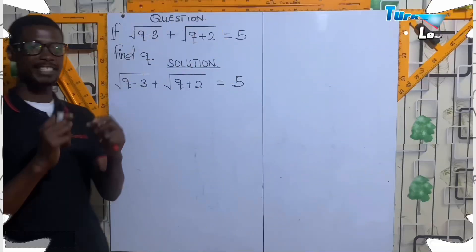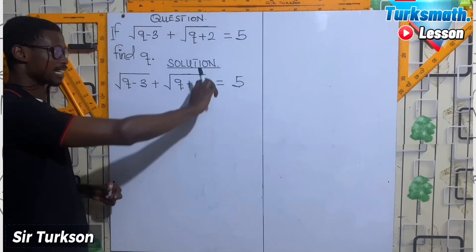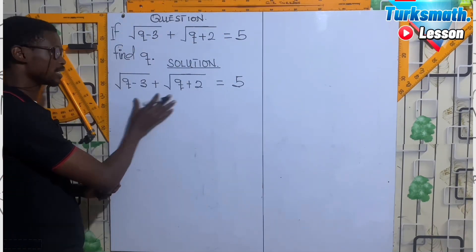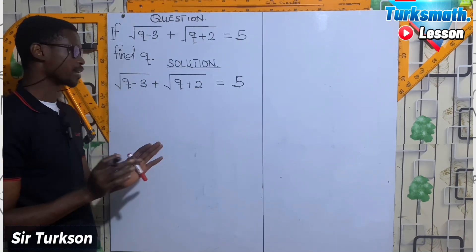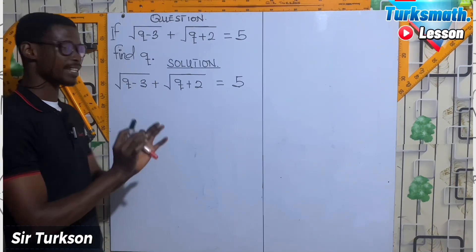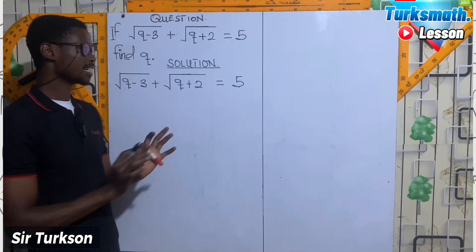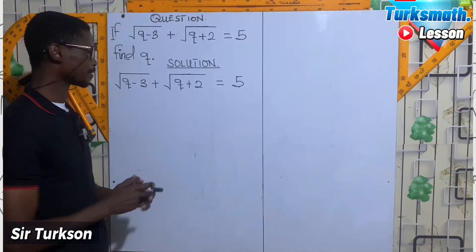With the direct method of solving this radical question, put this expression into a nice bracket. After putting them into a nice bracket, then square both sides.